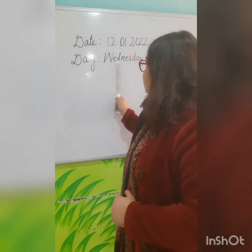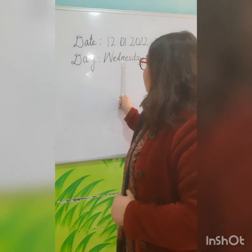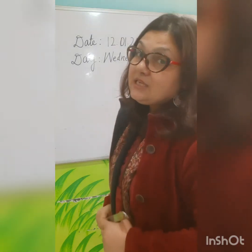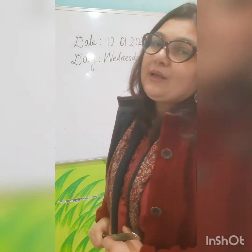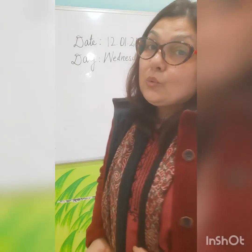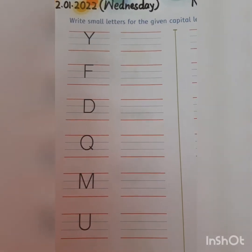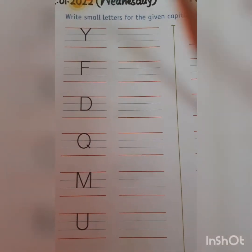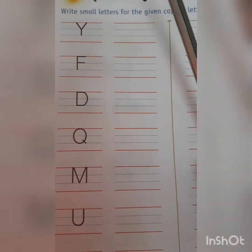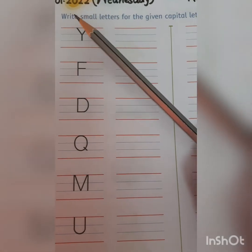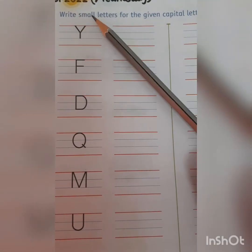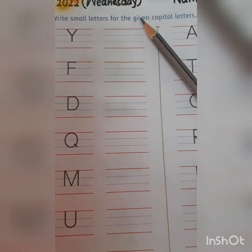W-E-D-N-E-S-D-A-Y. Wednesday. So let's see what is the worksheet today children. So children, this is your worksheet which is on page number 96 and your question is: write small letters for the given capital letters.